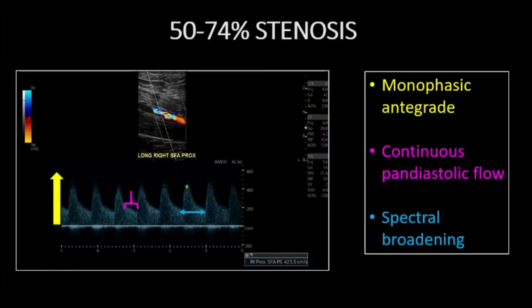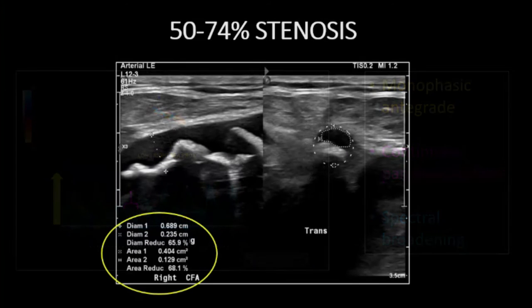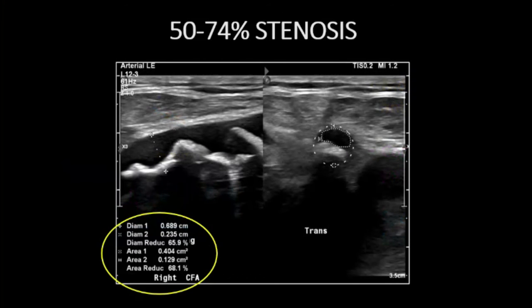With progressive luminal loss, there is a shift to monophasic waveform patterns. The early diastolic flow reversal is absent, and spectral broadening intensifies as a consequence of turbulent blood flow. Continuous pandiastolic flow will be detected in association with downstream loss of resistance. The sonographer was able to quantify the degree of luminal stenosis on grayscale imaging, confirming 50 to 74% stenosis.